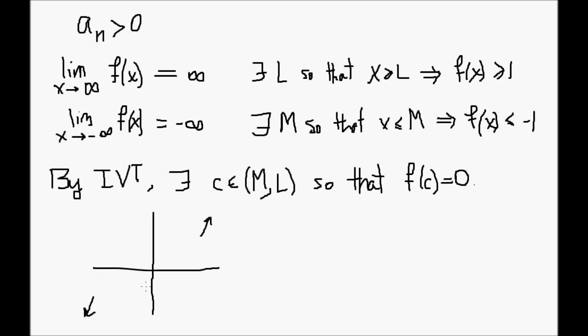What we did here formally is if I put negative 1 here and positive 1 here, then I'm guaranteed that if I mark these thresholds, there's going to be some value M on this side, so that no matter what, the graph of f(x) is always going to be lower than negative 1, and there's going to be some L over here that guarantees that f(x) is bigger than positive 1.